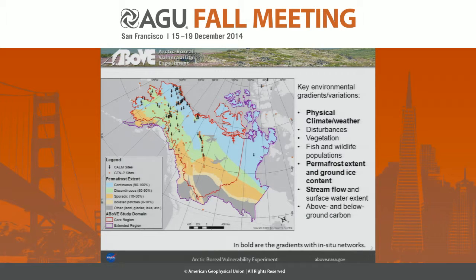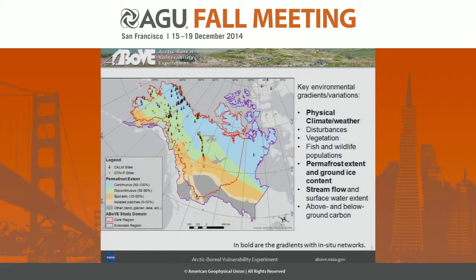This chart and the next really reinforce the same idea: there are gaps in these areas for in-situ data. In this solicitation that's going out, scientists can propose, and if they ultimately win, they'll be expected to tie into these in-situ networks and follow their standard data protocols. We're not trying to reinvent the wheel here — it's just filling the gaps of where data is needed.